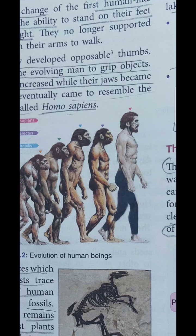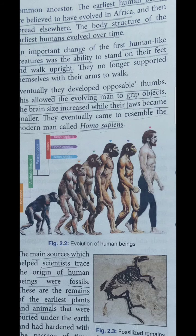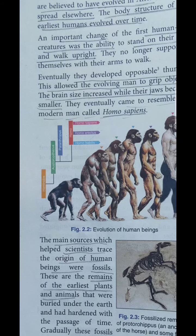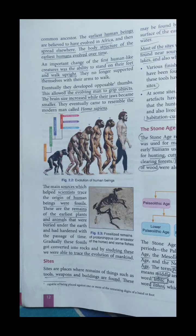So the evolution of human being is quite clear to you. The diagrammatic presentation is also here with names written alongside it. And if I talk about the first source which helps scientists to trace the origin of human beings, that is definitely the fossils. In ancient India these fossils are remains of early plants and animals that were buried under the earth and had hardened with the passage of time. This is how we can able to know about early human beings or early mankind.